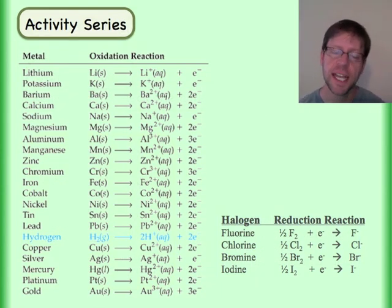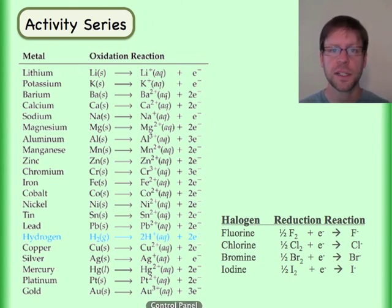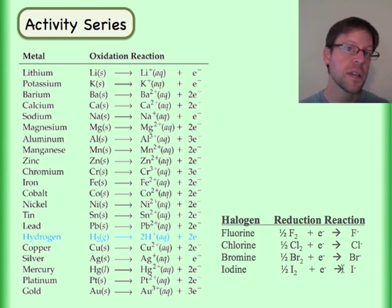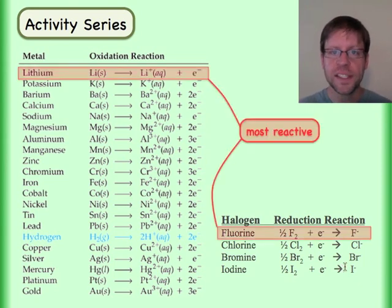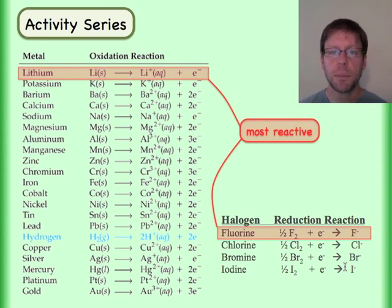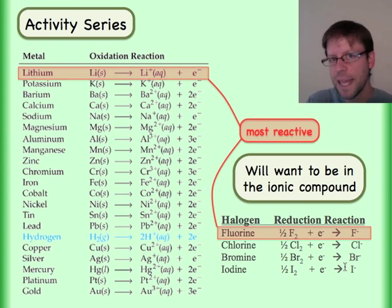The activity series rank orders the reactivity of different metals, or you can get a rank order of the reactivity of different halogens. It's listed so that the most reactive are up at the top, and what that means for us is that the most reactive thing will ultimately end up inside of the ionic compound.